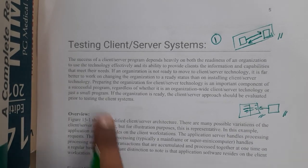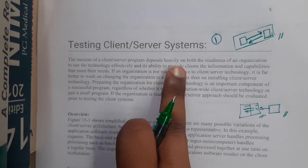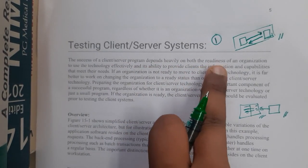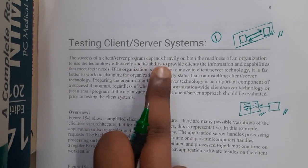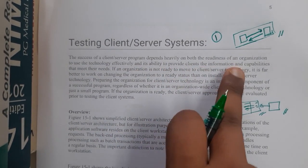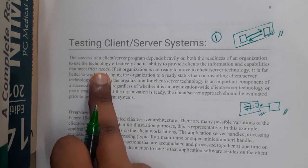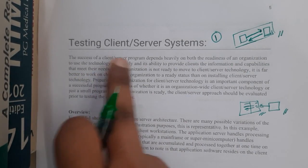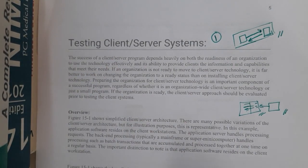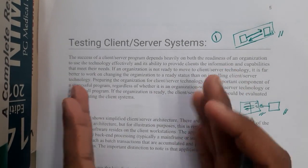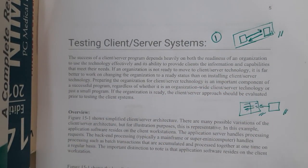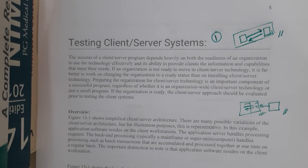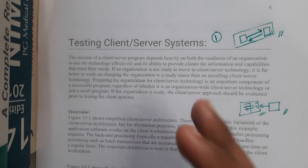The success of a client-server program depends heavily on both the readiness of an organization to use technologies efficiently and its ability to provide the client the information and capabilities that meet their needs. Only what the client requires should be given. If they don't have access permissions, an appropriate error should come instead of showing the data.